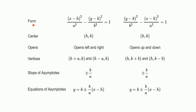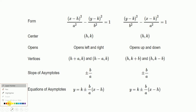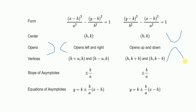Now this is very important. If you have a hyperbola of the form (x-h)²/a² - (y-k)²/b² = 1, the hyperbola opens left or right. If you have the form (y-k)²/b² - (x-h)²/a² = 1, the hyperbola opens upward or downward. So if x comes first, the hyperbola opens left or right; if y comes first, it opens up or down. The center remains (h, k) in both cases.